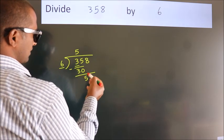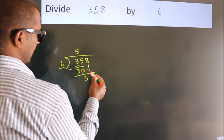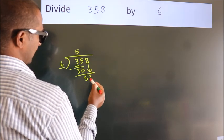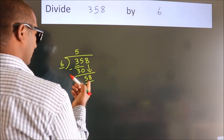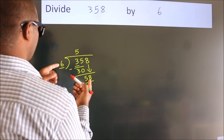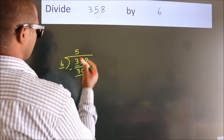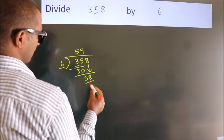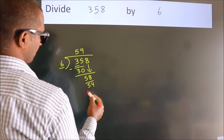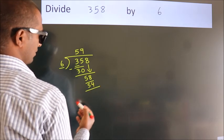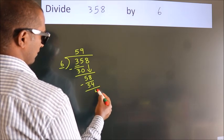After this, bring down the next number. So bring 8 down to get 58. A number close to 58 in the 6 table is 6 nines, which is 54. Now we subtract and get 4.